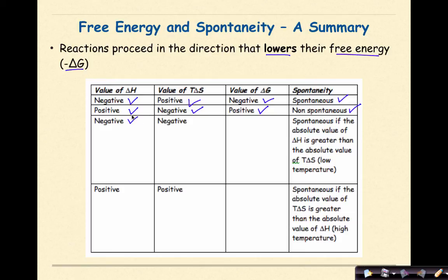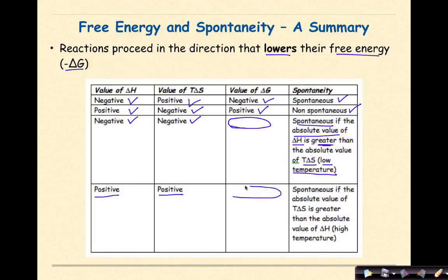Things become a little more complex when you have a negative delta H and a negative T delta S. In that case, your delta G will be spontaneous if the absolute value of delta H is greater than the absolute value of T delta S — in other words, we're looking at high temperatures. So sometimes calculating delta G can be pretty straightforward, and sometimes it's going to be a little more complex. Be careful when using this formula.